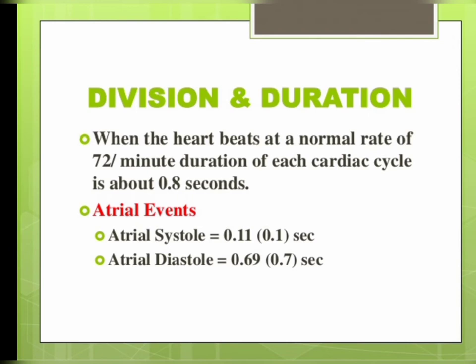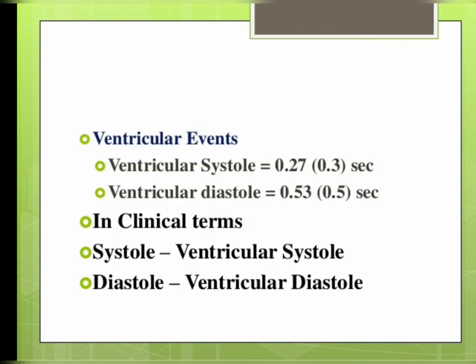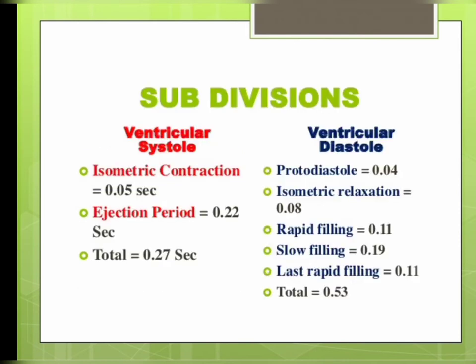The duration of each cardiac cycle is about 0.8 seconds. The atrial events are in two forms: atrial systole is 0.1 second and atrial diastole is 0.7 second. The ventricular events: ventricular systole is 0.3 second and ventricular diastole is 0.5 second. In clinical terms, systole refers to ventricular systole and diastole refers to ventricular diastole.